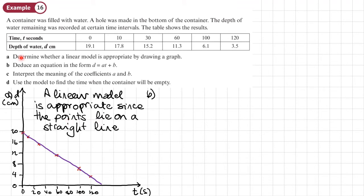So a linear model is appropriate since the points lie on a straight line. OK, let's go on to part B. And it says, deduce an equation of the form D equals AT plus B.